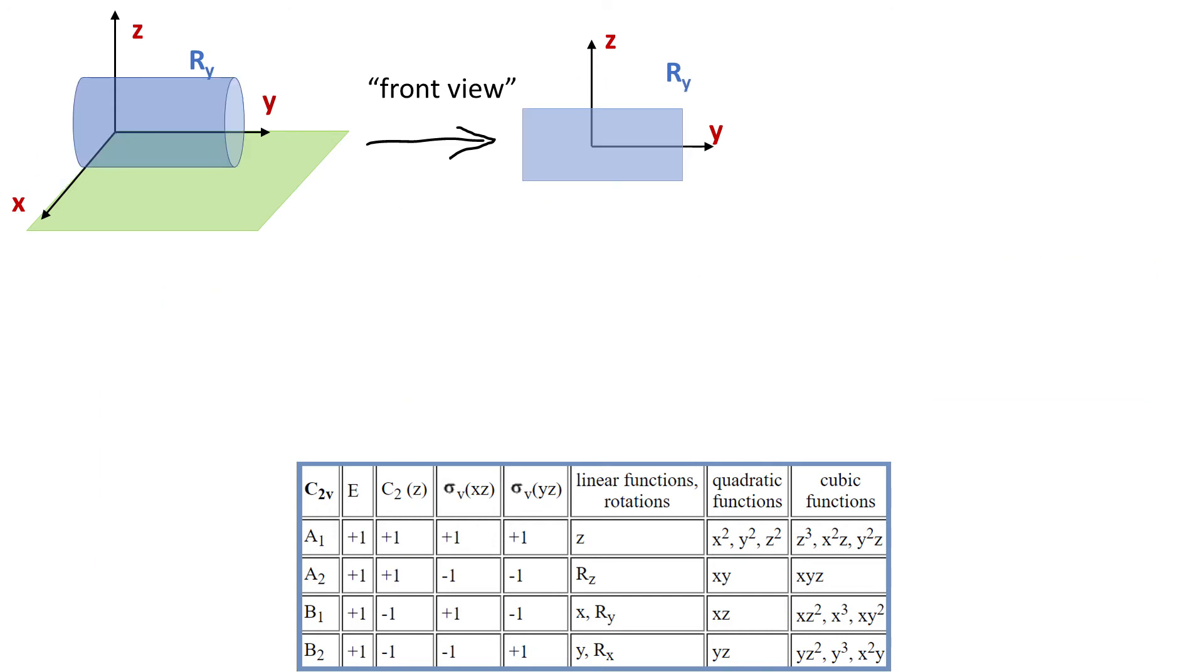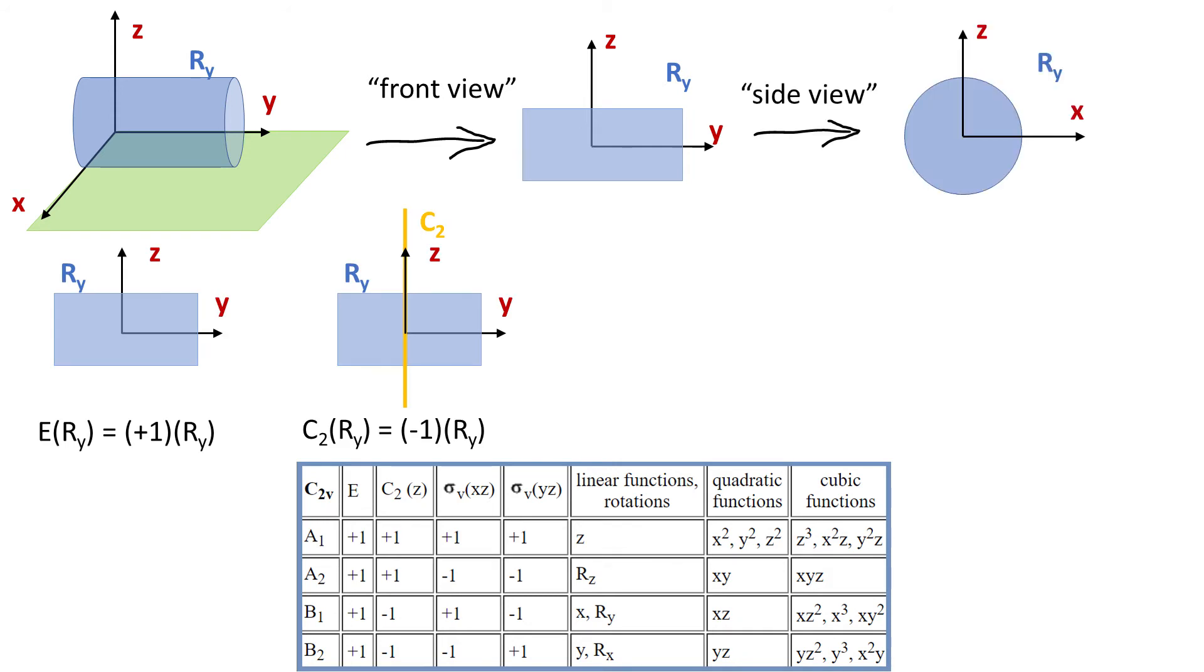Similarly, a cylinder along y-axis will look like a rectangle from a side. C2 reverses the direction because what matters is the fact that C2 axis is perpendicular to the cylinder. Anyway, sigma xz does not reverse the direction of rotation because it slices along the rotation plane.